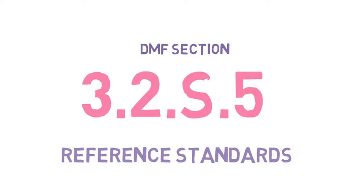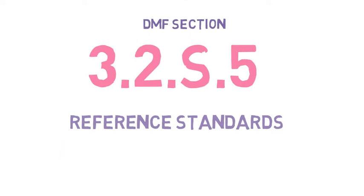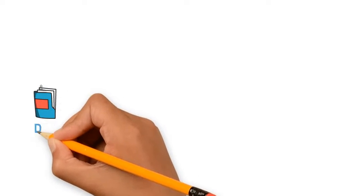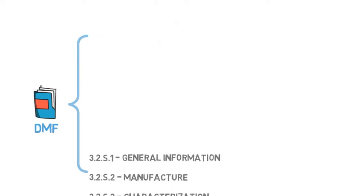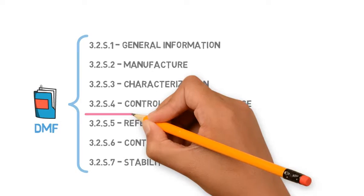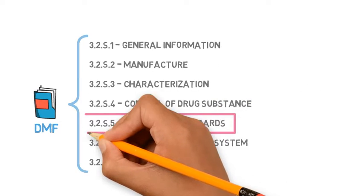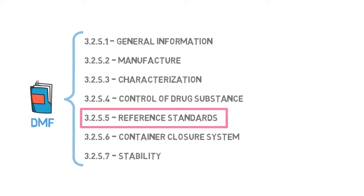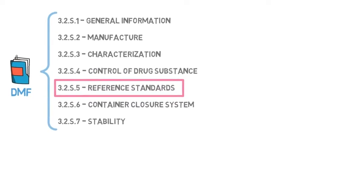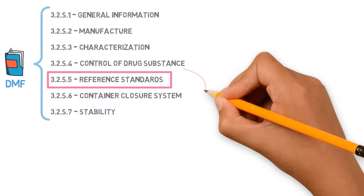DMF Section 3.2.S.5 Reference Standards. The DMF in CTD format consists of seven sections. In this video, we will talk about Section 3.2.S.5, which is about the reference standards and materials.